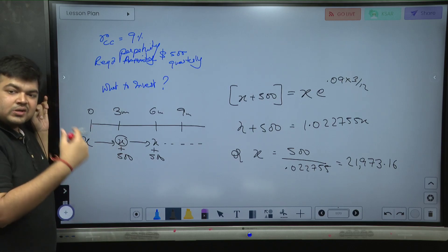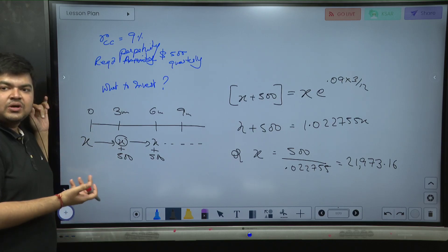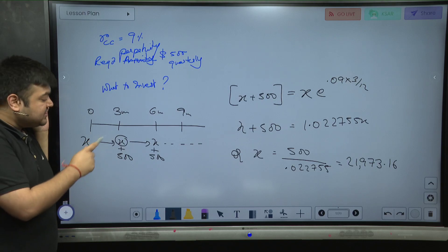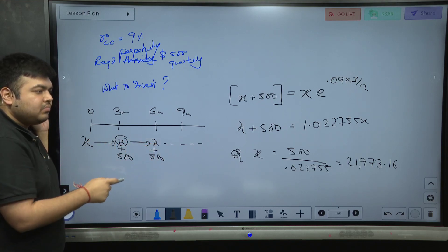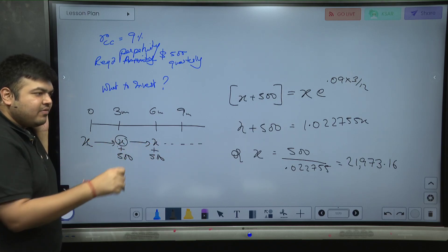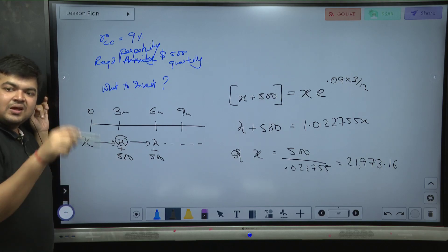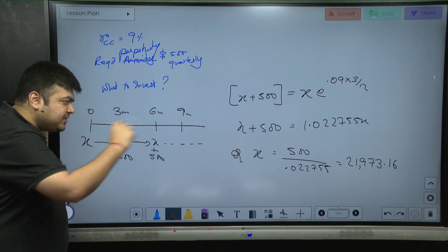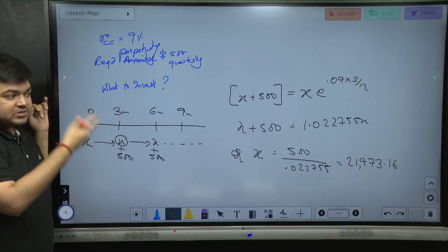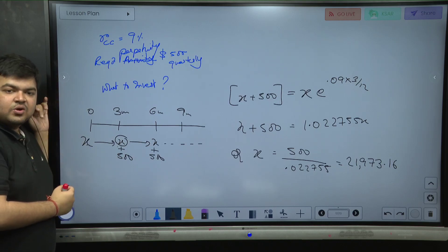That is exactly the logic behind the derivation of perpetuity formula - that your principal becomes the same. So this interest has to be 500 because I am going to take out the entire interest and the principal is going to remain constant, because your interest is not getting reinvested away. It is a perpetuity.